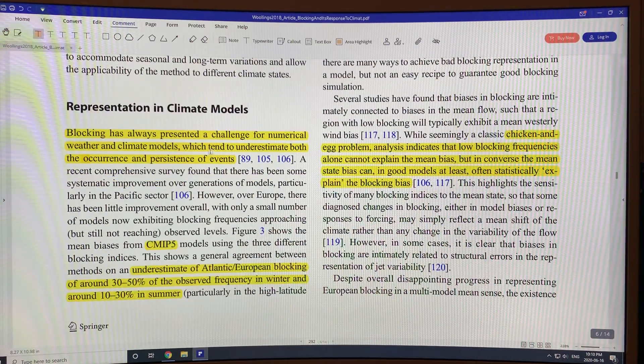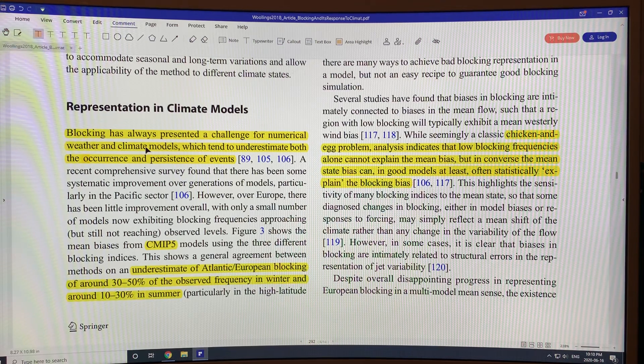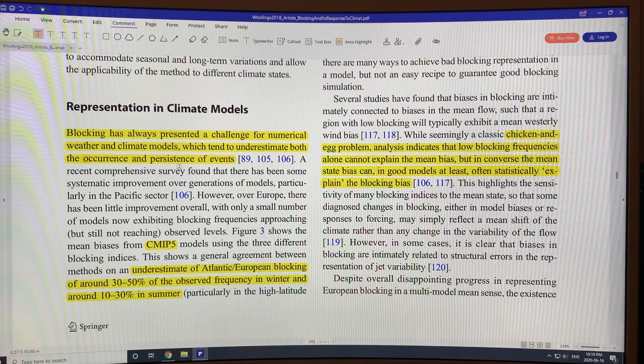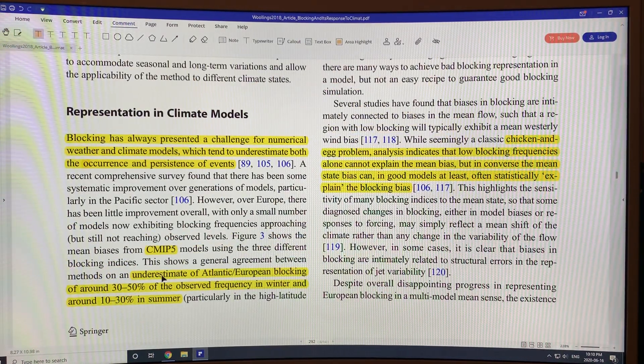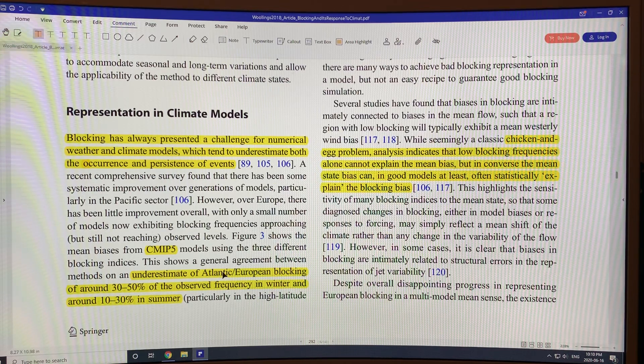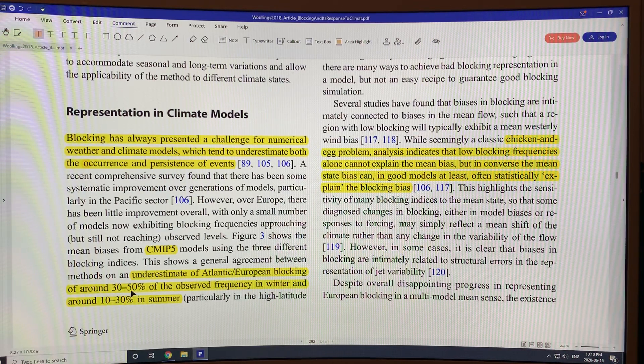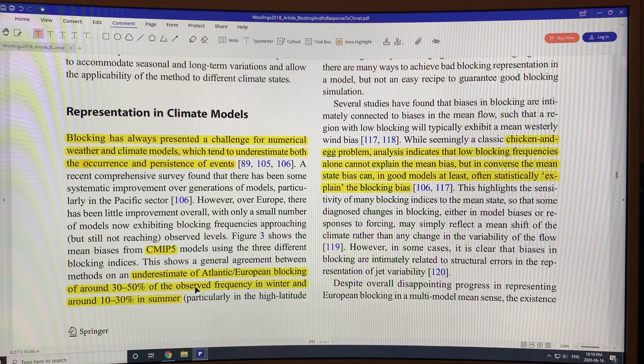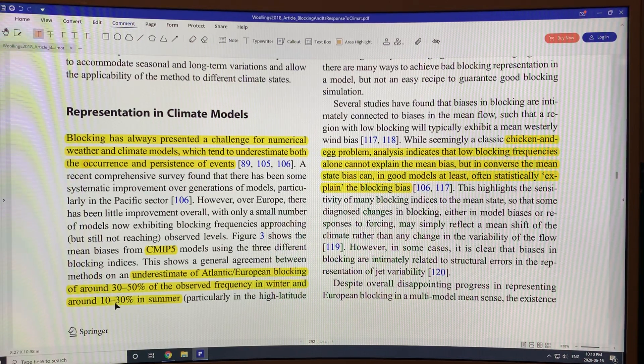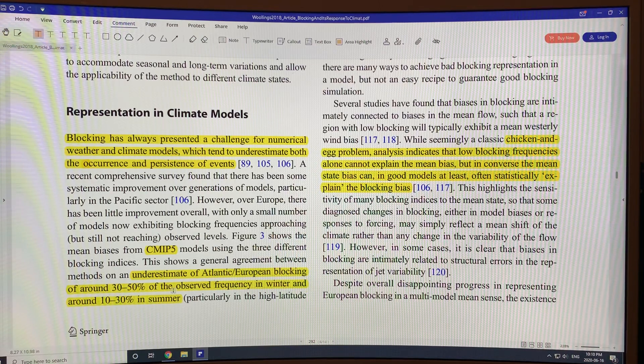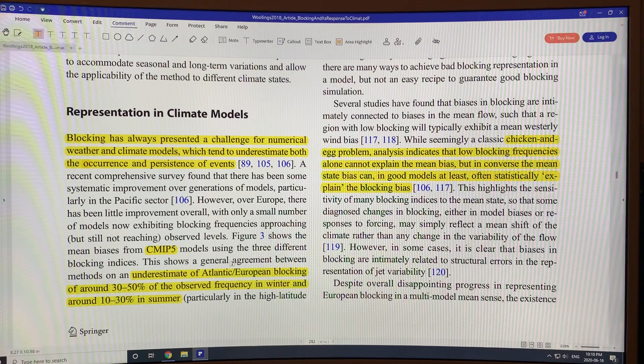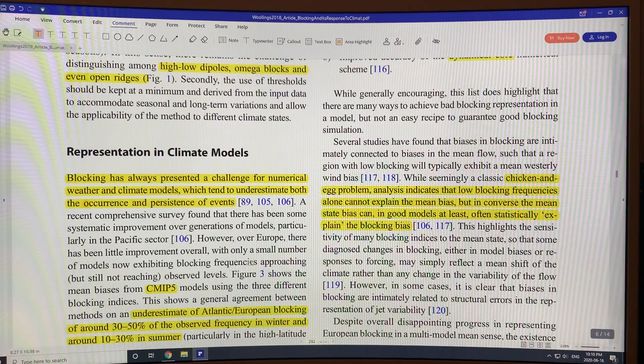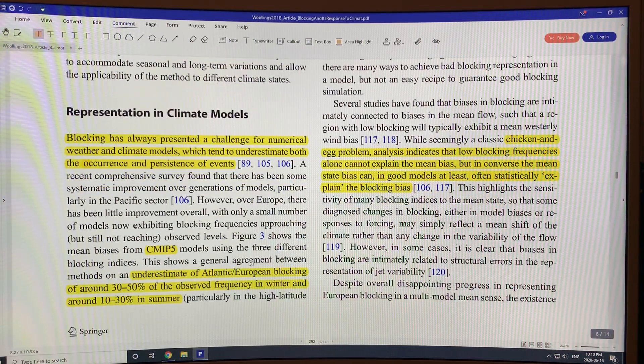Blocking has always been a challenge for numerical weather models and climate models. They underestimate both the occurrence and persistence of events. For example, the CMIP-5 climate models underestimate the blocking in the Atlantic European regions by about 30 to 50% of the observed frequency in winter and about 10 to 30% in the summer. So they're not very accurate in terms of getting the frequency of blocking. And they need to be improved significantly.